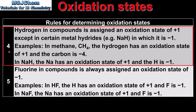Rule 4 concerns hydrogen. Hydrogen in compounds is assigned an oxidation state of plus 1, except in certain metal hydrides where it is minus 1. In methane (CH4), hydrogen is plus 1 and carbon is minus 4, and the sum equals 0. In NaH, a metal hydride, sodium is plus 1 and hydrogen is minus 1. So hydrogen is usually plus 1, except in metal hydrides.